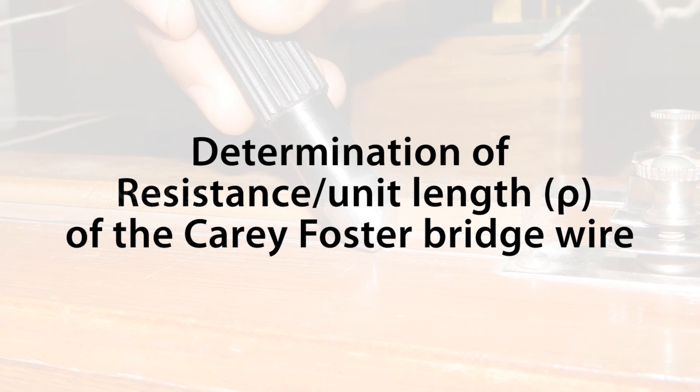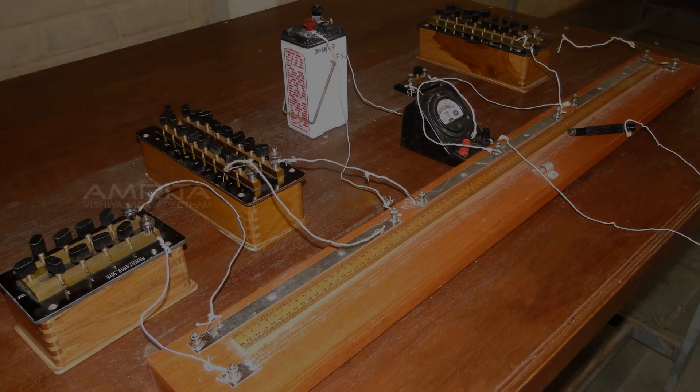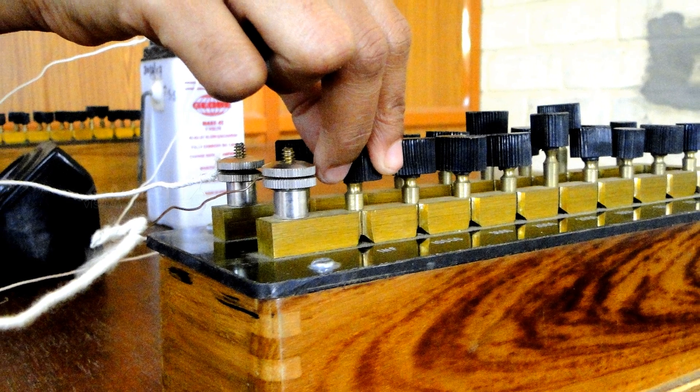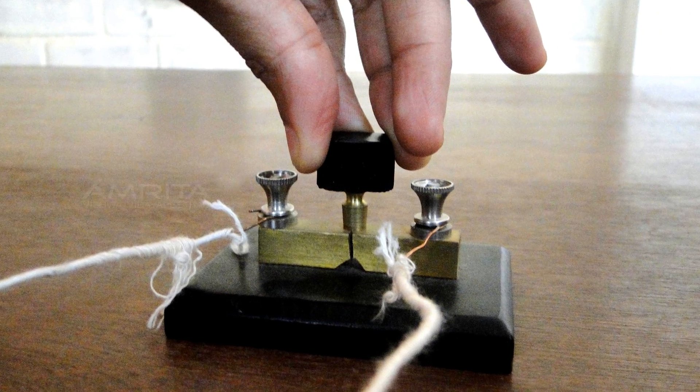Procedure: Determination of resistance per unit length of the Carey Foster bridge wire. Make the circuit connections. Set the resistance of the fractional resistance box to a minimum. Plug in the battery key so that a current flows through the bridge.